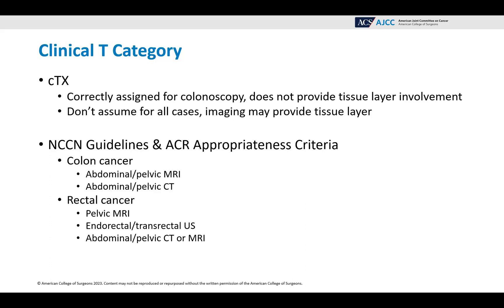You should also look at NCCN guidelines and the American College of Radiologists appropriateness criteria. They will give you a lot of information about what types of imaging will be ordered or is appropriate. For colon cancer, you're most likely going to see abdominal and pelvic MRI or abdominal and pelvic CT. For rectal cancer, you'll probably see a pelvic MRI, and you might also see endorectal or transrectal ultrasound and abdominal pelvic CT or MRI.